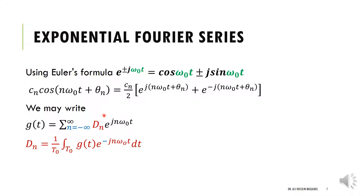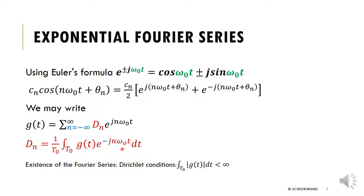To find d_n, you use a direct integration formula — multiply the signal by the complex exponential with a minus sign and integrate over one period. Finding d_n is an advantage because you only need one coefficient rather than separate phase and constant terms. Note that not every function can be solved this way; existence conditions require that the area under the curve be finite.